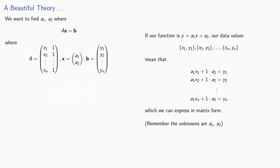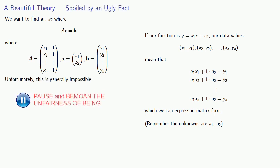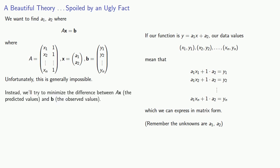And so this seems to be a fairly simple matrix equation. We want to find a1, a2, where Ax equals b. Unfortunately, this is generally impossible. We have too many equations and not enough unknowns. So instead, we'll try to minimize the difference between Ax, which we can think about as the predicted values, and b, which are the observed values.